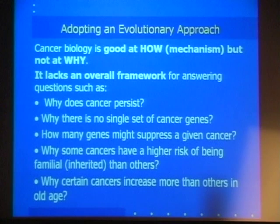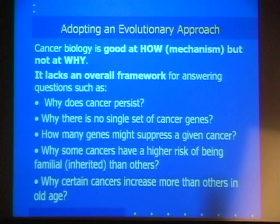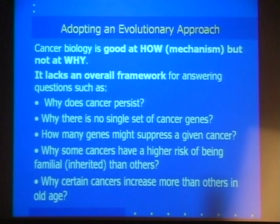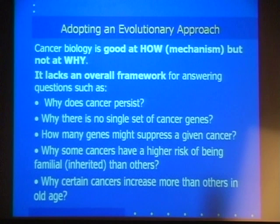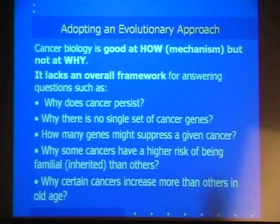This is the reason I would argue an evolutionary approach is helpful — it's complementary to the traditional mechanistic-based approach. Cancer biologists are typically trained in mechanistic biology and answer 'how does something happen?' They're very good at dissecting mechanisms. But they don't look at what the evolutionary biologist is interested in, which is the 'why' of things: why are things how they are, how did this evolve? As an evolutionary biologist, we look for broader issues — what framework can help us understand cancer? Simple questions like: why is cancer still around, why is there not a single set of cancer genes, how many genes might suppress a given cancer, why are some cancers more inherited, and why do certain cancers increase more in old age?